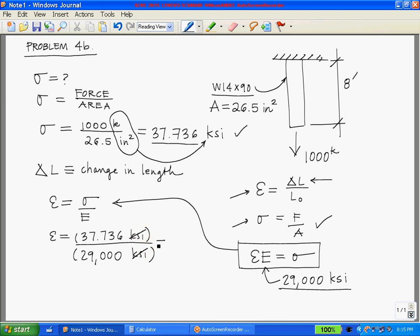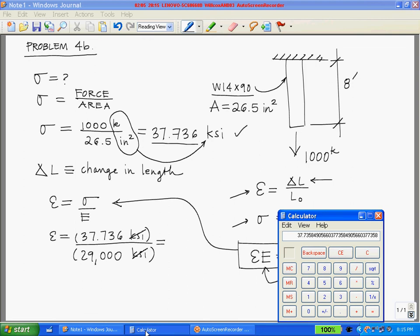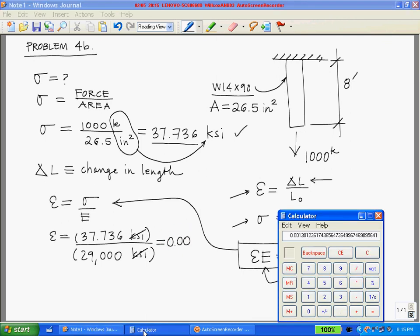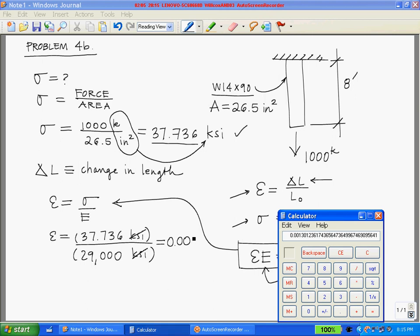Note that the units cancel out. Let's put that in the calculator: 37.736 divided by 29,000 equals 0.0013.